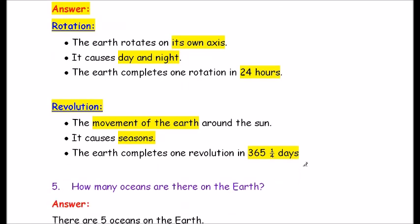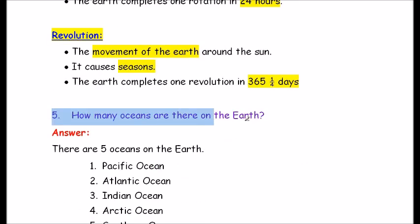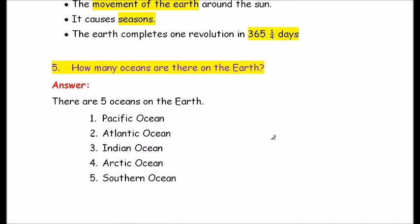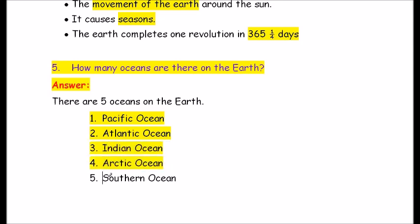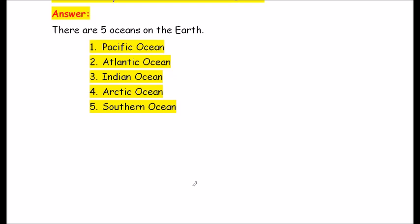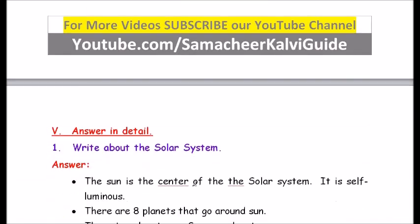Question number 5: How many oceans are there on the Earth? Answer: There are five oceans on the Earth — the Pacific Ocean, Atlantic Ocean, Indian Ocean, Arctic Ocean and Southern Ocean.